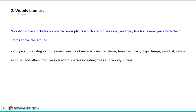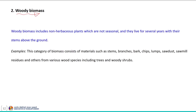The next classification is woody biomass. Woody biomass includes non-herbaceous plant material which lives for longer periods and stays on the ground with its stem. This woody biomass includes non-herbaceous plants that are not seasonal and live for several years with their stem above the ground. This category mainly consists of material such as stems, branches, bark, lumps, sawdust, and sawmill residues.